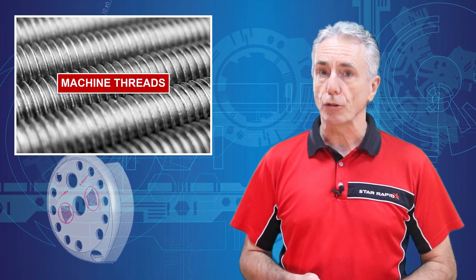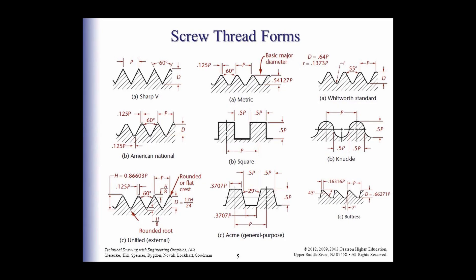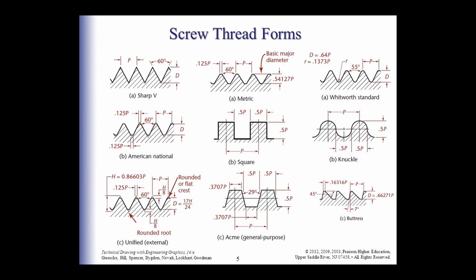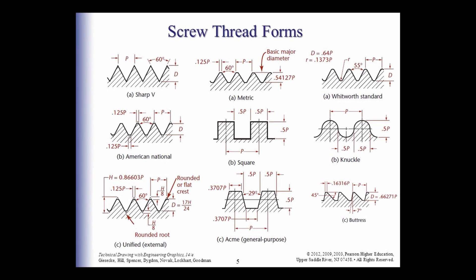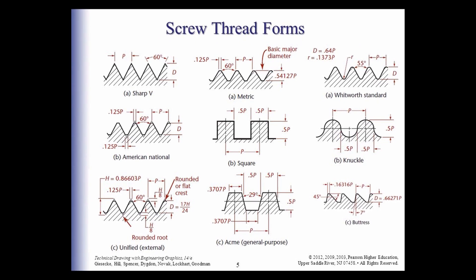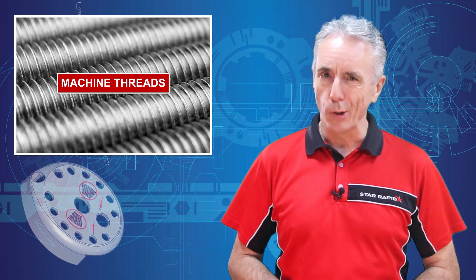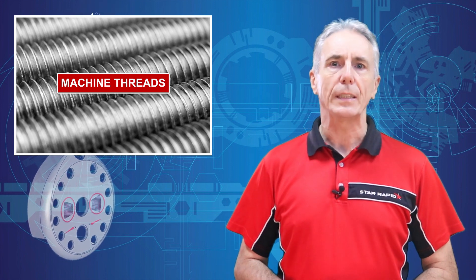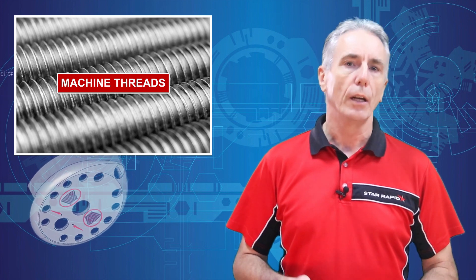But just because threads and screws are now commonplace, that doesn't mean they're simple. In fact, modern thread forms come in surprisingly sophisticated geometrical shapes that took hundreds of years to figure out and standardize, and engineers are still working out which types are best for which applications. We think it's about time we gave some long overdue respect to the humble machine thread, while learning some interesting and useful information that every machinist and engineer should know.